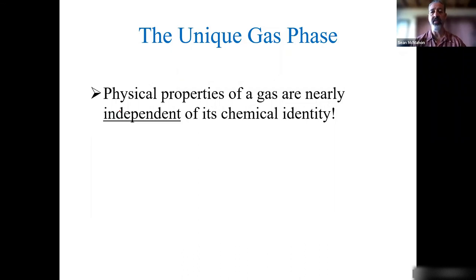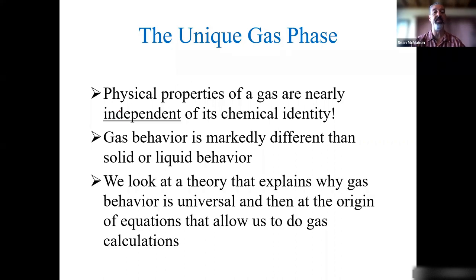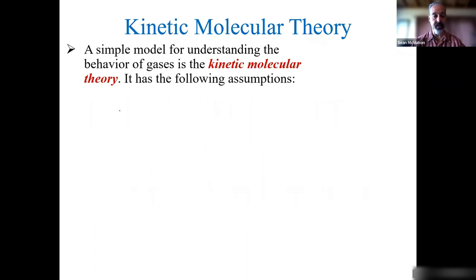Gases are a unique phase, and nearly all of their properties are independent of what they are — which is unique. Typically, the chemical identity of a substance influences whether it has strong surface tension or a high boiling point. Gases are kind of independent of that. So gas behavior is different from the condensed phases of solids and liquids. We're going to look at the theory that explains why gas behavior is universal, and then we're going to talk about the calculations. The theory is kinetic molecular theory. In a simple model for understanding the behavior of gases, we use the following assumptions.